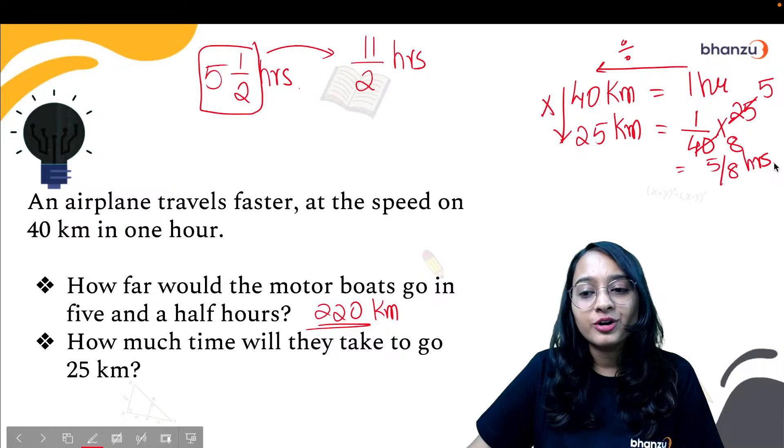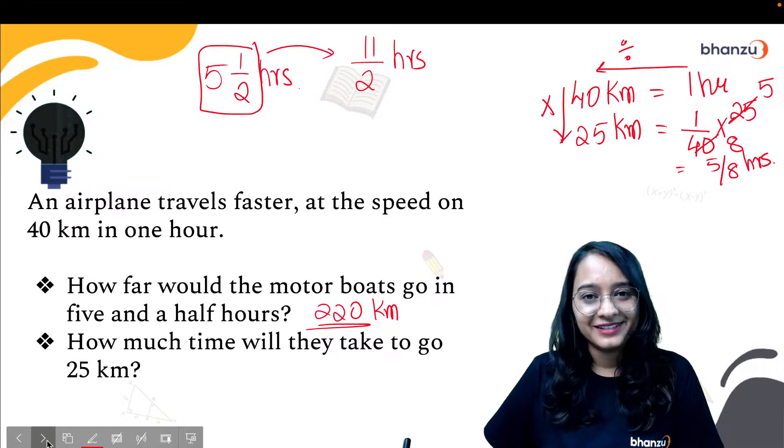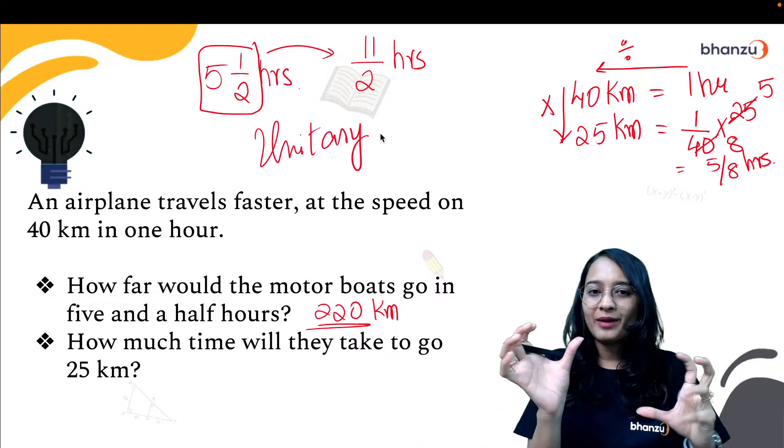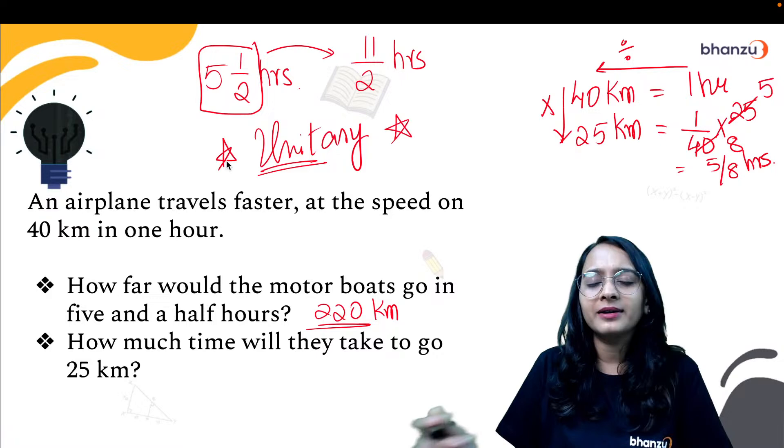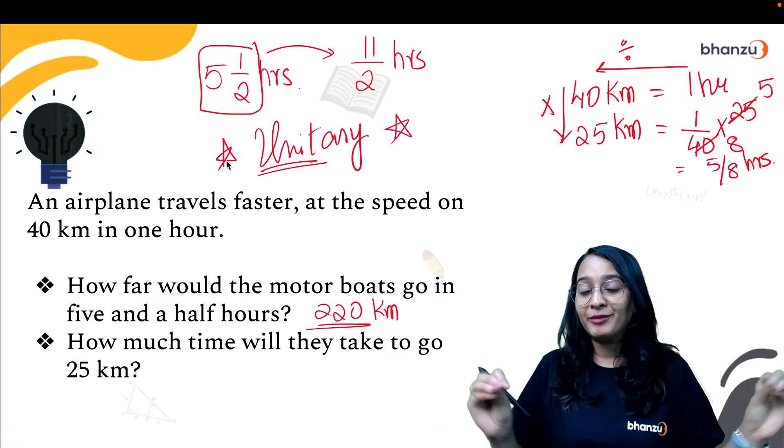You can use your 5 table. 5 into 5, 5 into 8. So it takes 5/8 hours to travel 25 kilometers. So there's something called unitary method where they will give you one unit value and you will have to find out for x amount of units, or they will give you for x amount of units and you will have to find for one unit. That's why it's called unitary method.